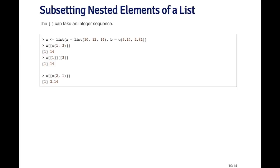The double bracket operator can also take an integer sequence, which lets it recurse into a list. Looking at this list where the first element a is itself another list with elements 10, 12, and 14 — suppose I want to extract the number 14. That's the third element of the first element. I can extract it by passing the vector c(1, 3) to x using the double bracket operator, which is equivalent to double-subsetting with 1 and then 3. I can also extract the first element of the second element by passing the integer vector c(2, 1) to get 3.14.